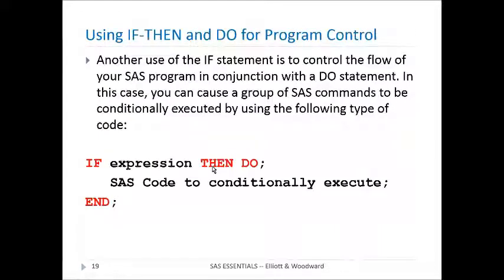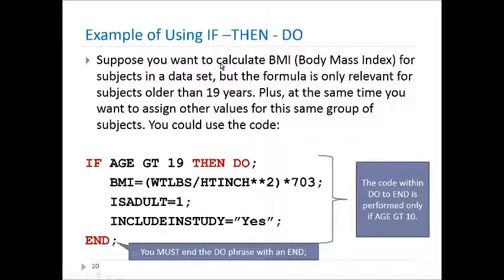Now let's look at a final way to use the if then statement, and that is with a do program control in it. So here, if expression is true, then do some conditional statements all the way to the end statement. For example, suppose I want to calculate BMI, body mass index, for people who are age 19 or greater. Then notice here I say if, here's my condition, age greater than 19, then do. And then all of the code in between the do and the end will be executed when this condition is met. So this gives you a way to execute a number of SAS lines of code depending on whether an expression is true or not.